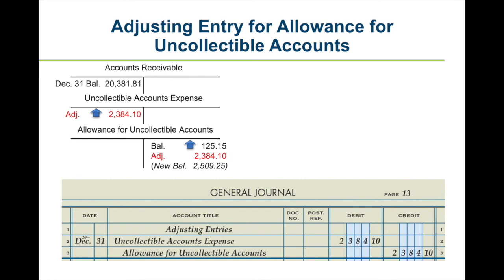Going on to the general journal, we record adjusting entries in the same place as in unit one. Write the title 'adjusting entry' centered on the first line — there is no source document for this transaction. Write the date at the end of the fiscal period. Write the debit entry first: uncollectible account expense, with the amount. Then indent slightly and write the credit: allowance for uncollectible accounts, with the same amount. That is how you record the adjusting entry for allowance for uncollectible accounts.